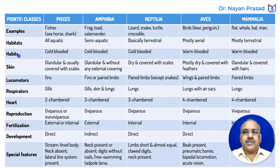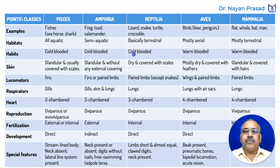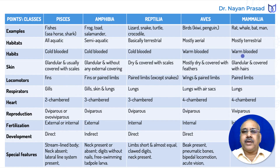About habits — the nature of the body: all fishes are cold-blooded, amphibians are cold-blooded, and reptiles are cold-blooded, meaning they have variable body temperature that varies according to the surrounding temperature. However, birds and mammals are warm-blooded, having a fixed body temperature.